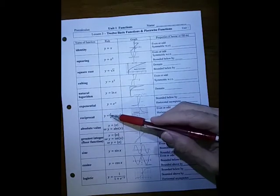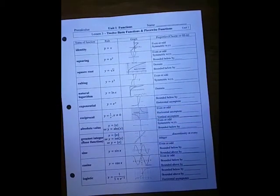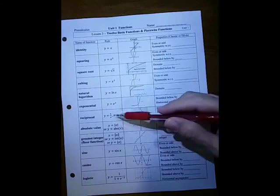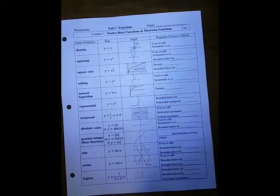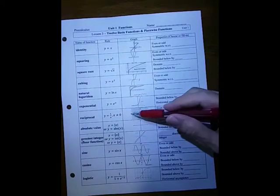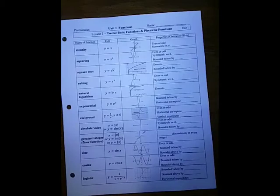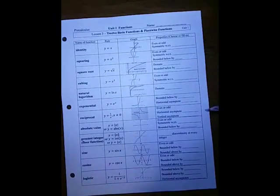The reciprocal function, which is 1 over x — x can't be 0, which is why it has a vertical asymptote, and there's also a horizontal asymptote. Is that an even or an odd function? What are the equations of the horizontal and vertical asymptotes?